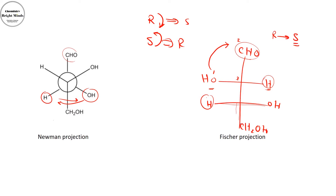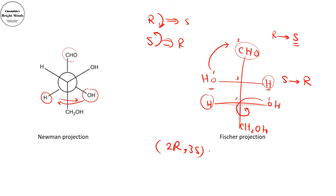If the hydrogen were on the top or bottom I would not flip R or S, but since it is on the side I must flip. For the second chiral center, the priority goes: hydroxyl first, then the carbon attached to aldehyde and hydroxyl, then the carbon attached to two hydrogens and hydroxyl. Going anticlockwise gives S, which I convert back to R. So I have 2R and 3S. The hydroxyl groups are at positions 2, 3, and 4 — three hydroxyl groups, so trihydroxy — and with four carbon atoms the compound is butanol, giving 2R,3S-trihydroxybutanal.